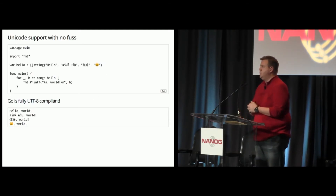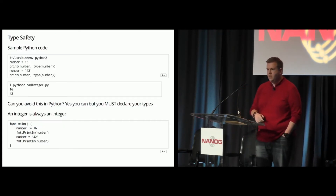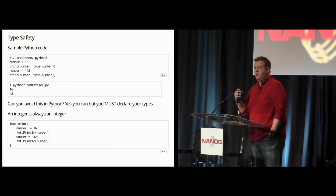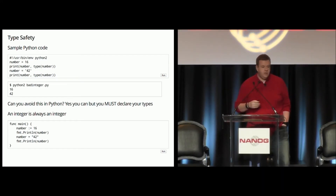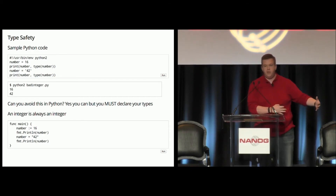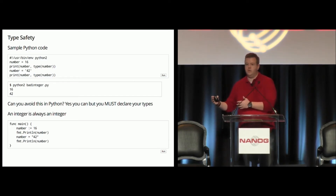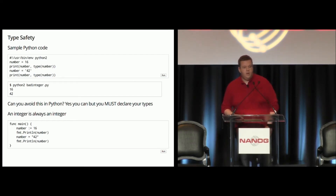But why Go? One of the big things is Unicode support — straight out of the box in Go. But one of the biggest things for me was type safety. It's very easy in Python, especially for inexperienced people trying to get into programming or network automation, to make very basic mistakes. It's easy to turn an integer variable into a string and vice versa, and Python will just let you do that. Golang will not let you do that at all.